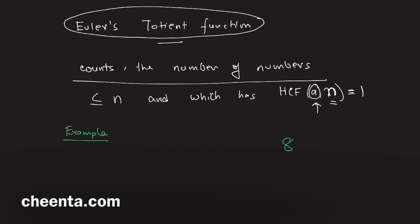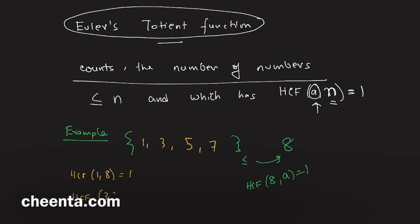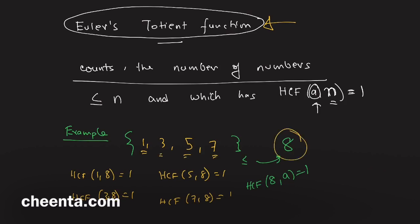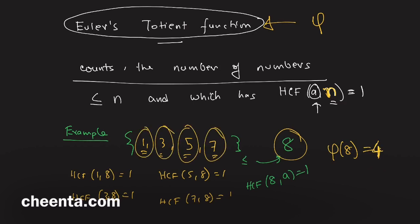For example, suppose n = 8. Look at all numbers less than or equal to 8 which have HCF 1 with 8. Those numbers are 1, 3, 5, and 7. For example, HCF(1,8)=1, HCF(3,8)=1, HCF(5,8)=1, and HCF(7,8)=1. So φ(8) = 4, because there are four such numbers which have HCF 1 with 8.